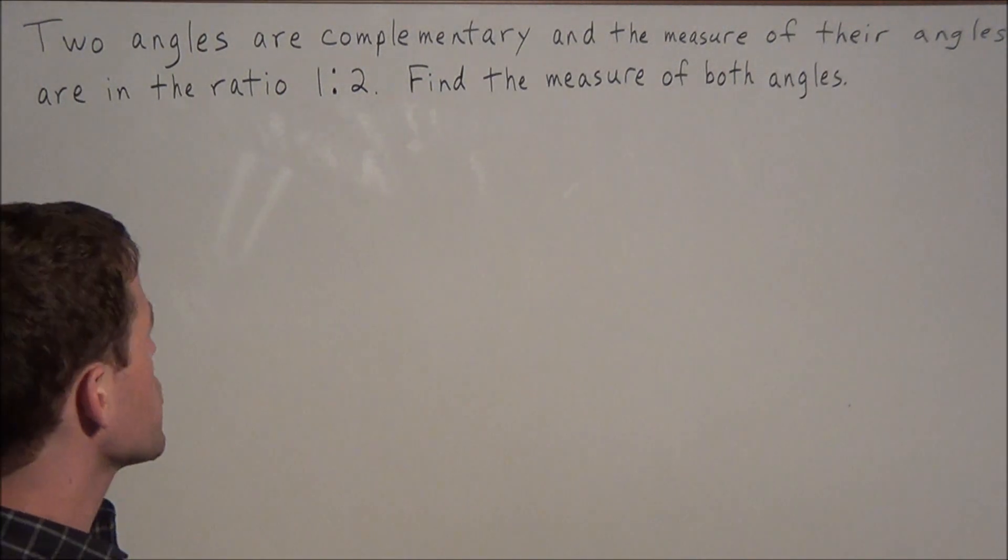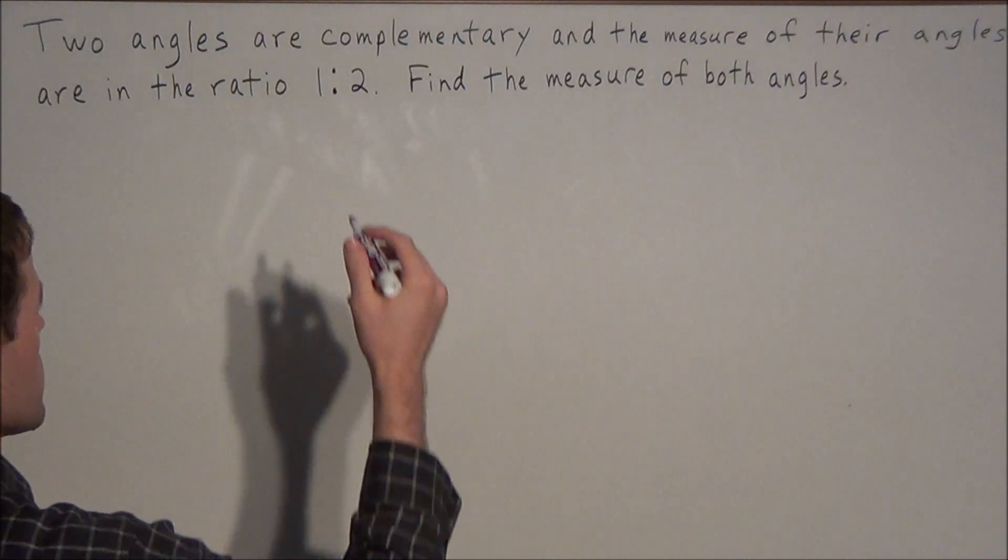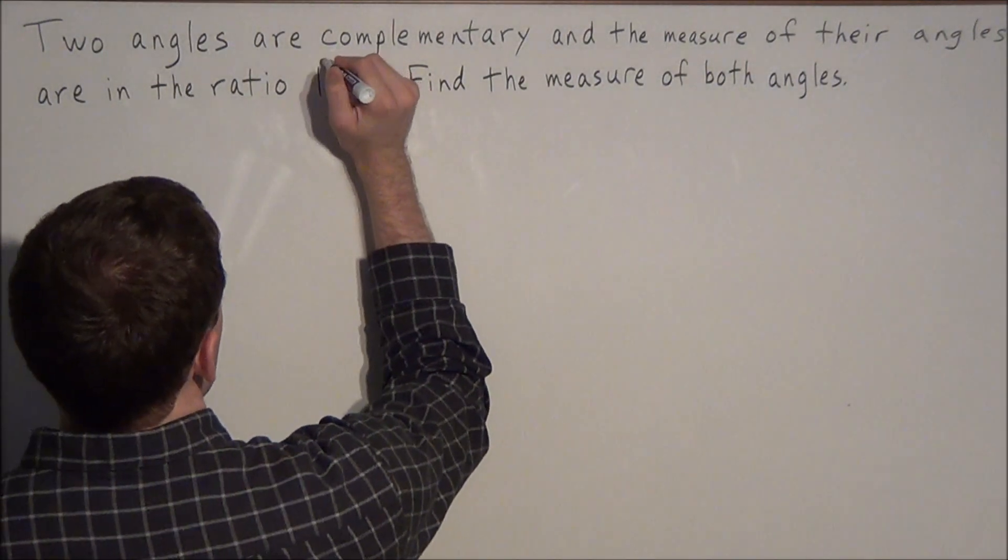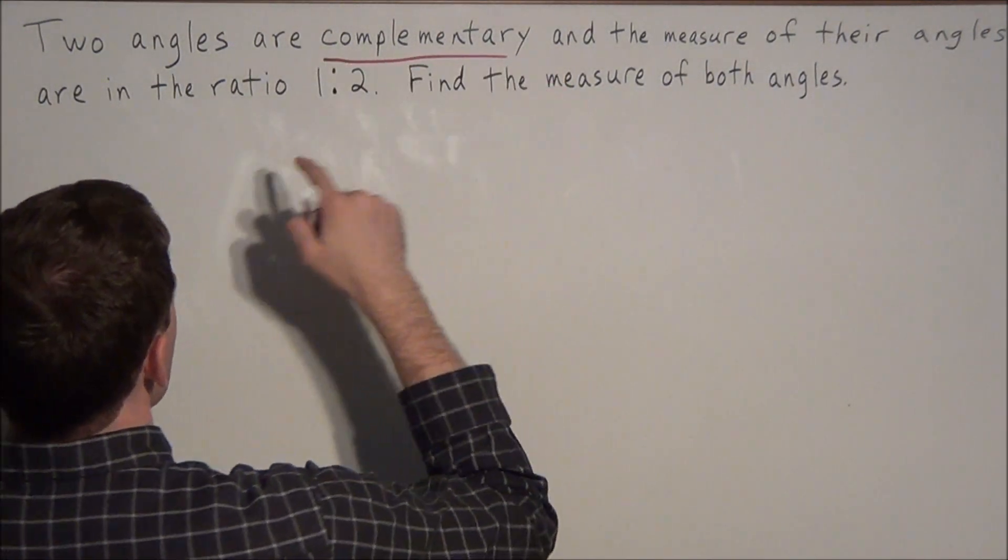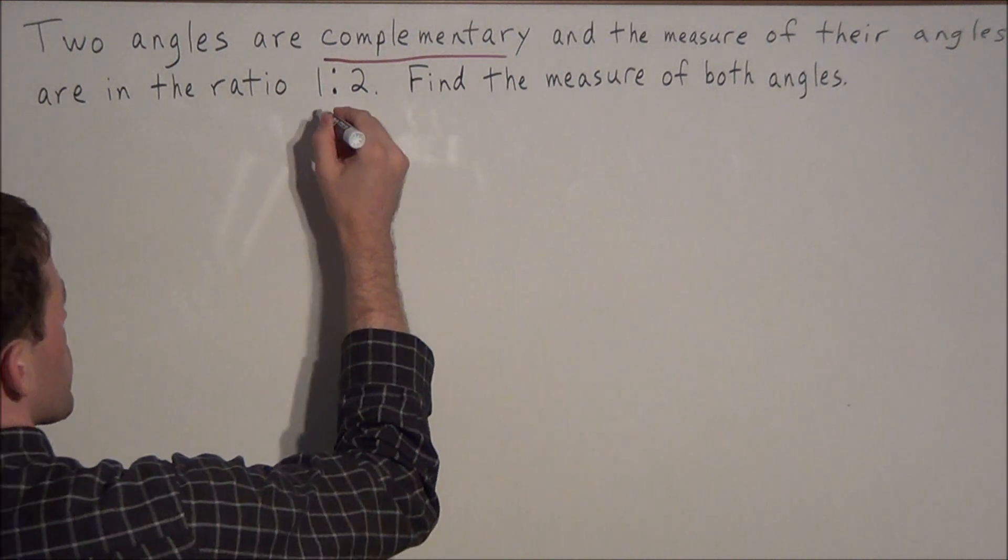With word problems in general, you always want to underline the most important piece of information. We know that these two angles are complementary and their measures are in the ratio of 1 to 2.